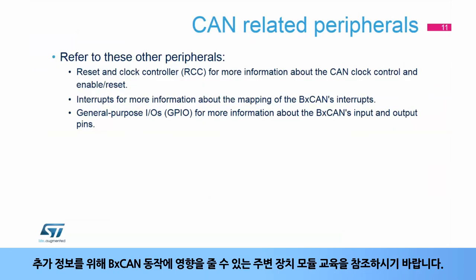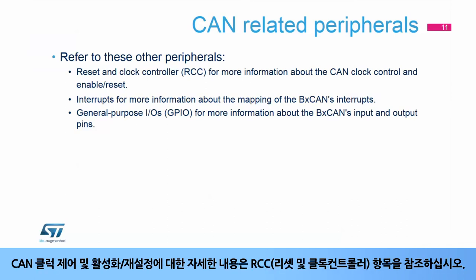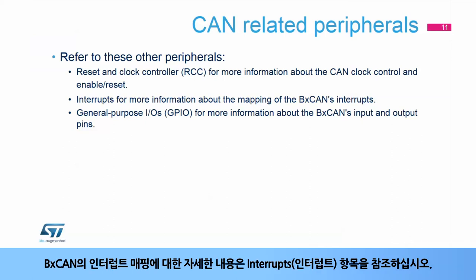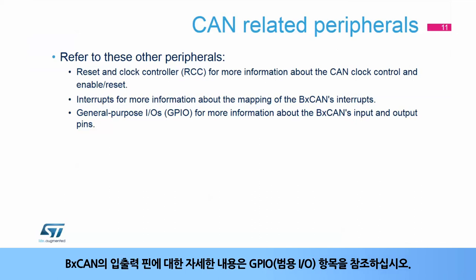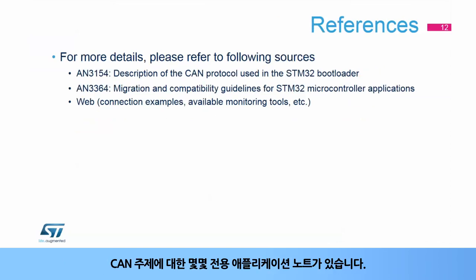For additional information, refer to the training modules for these peripherals which may affect BX CAN behavior: Reset and Clock Controller, or RCC, for more information about the CAN clock control and enable reset; Interrupts, for more information about the mapping of the BX CAN's interrupts; General Purpose IOs, or GPIO, for more information about the BX CAN's input and output pins.